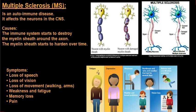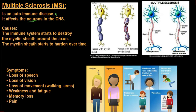Looking at multiple sclerosis now. Multiple sclerosis is an autoimmune disease, which means it is a disease where your body basically attacks itself. Your body's immune system will start attacking its own cells and structures within the body, and this will eventually affect the neurons in the central nervous system, which are very important for normal function.